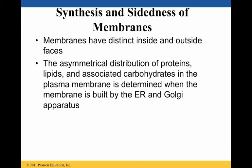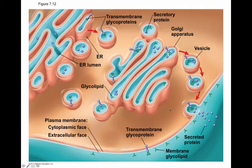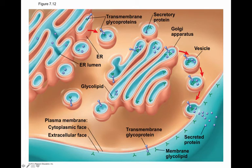How then are these proteins synthesized? What dictates where these proteins will end up — whether on the inside or outside of the membrane? The asymmetrical distribution of proteins, lipids, and carbohydrates in the plasma membrane is determined when the membrane is built by the endoplasmic reticulum and the Golgi apparatus. Transport vesicles bud off the ER containing proteins that have been modified, such as a transmembrane glycoprotein making its way to the cis face of the Golgi.